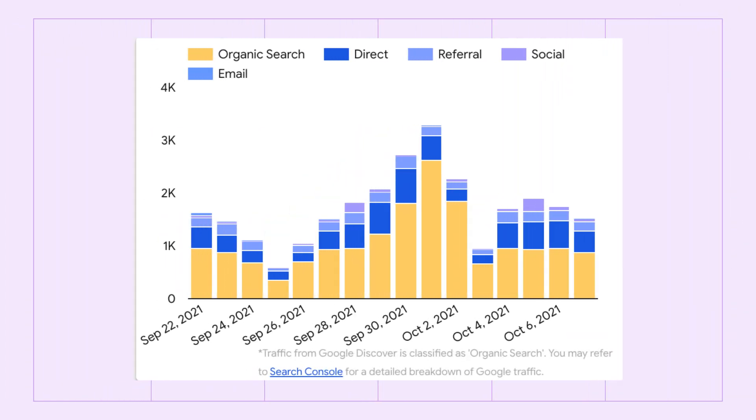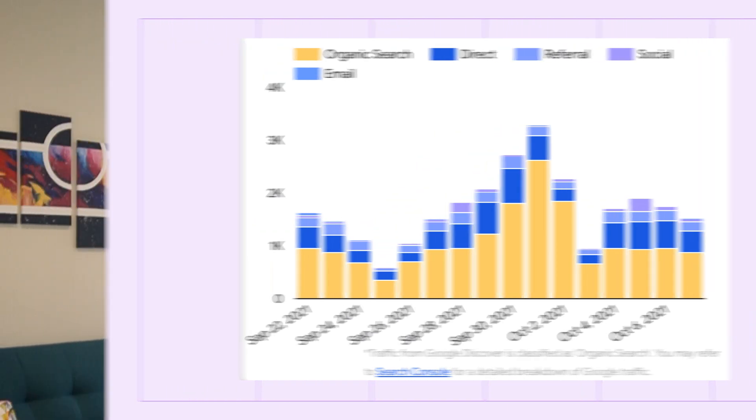Finally, you can see an overview of the traffic your stories received from different channels like social, referral, organic search, or direct. You can also configure custom channels in Google Analytics and they will automatically appear in this chart. Direct traffic may also include discovered data. Please refer to the Search Console for a detailed breakdown of Google traffic.